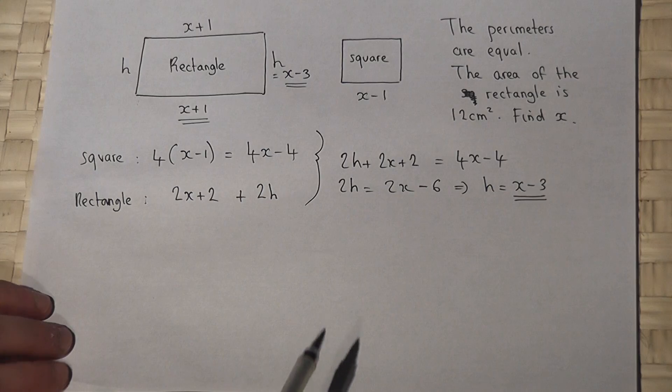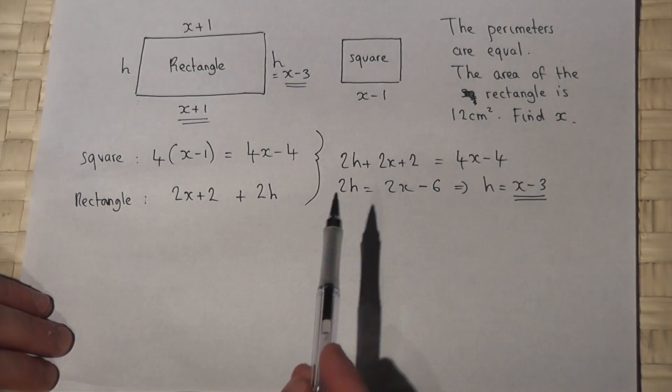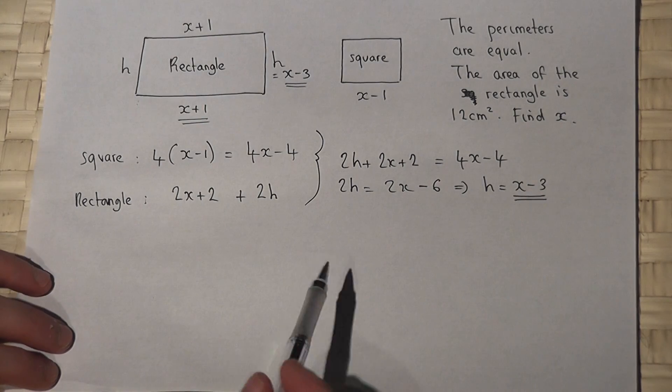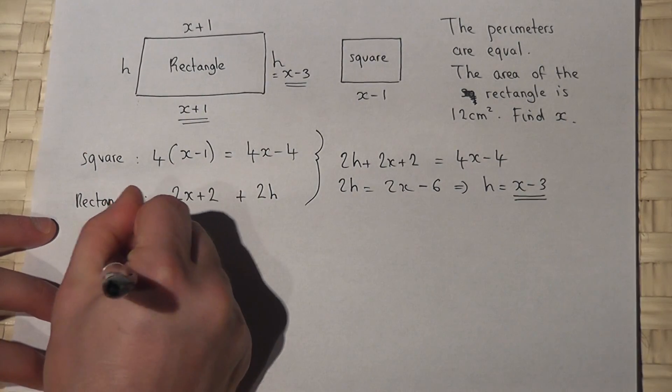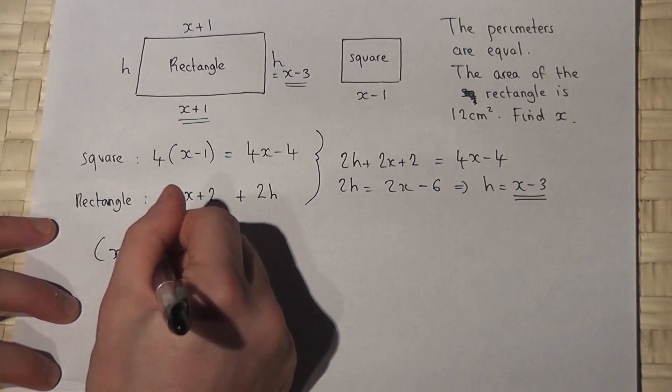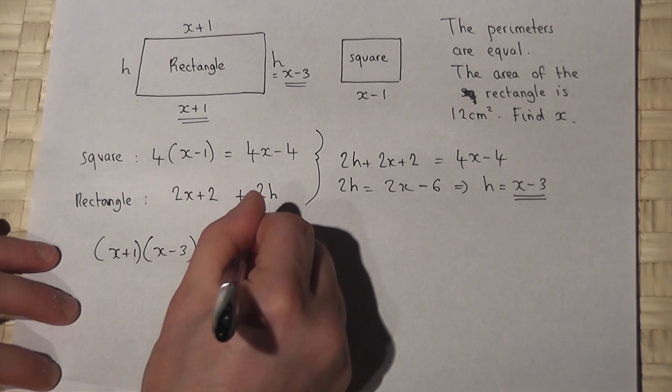Now then we're told that the area of the rectangle is 12. Find x. Now the area of this rectangle must be the base x plus 1 times the height which is x minus 3, and this must equal 12.